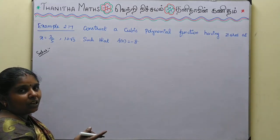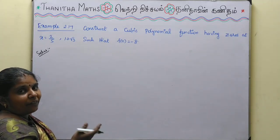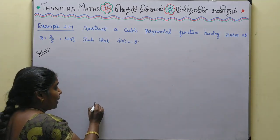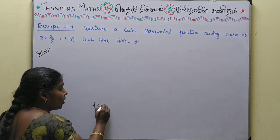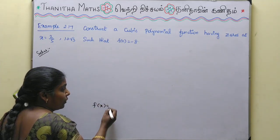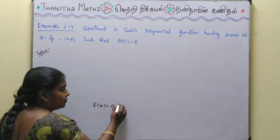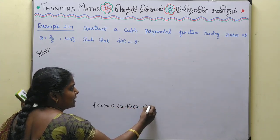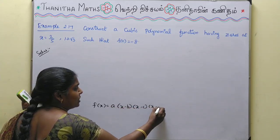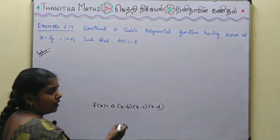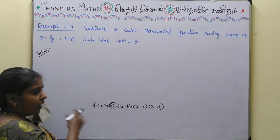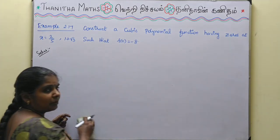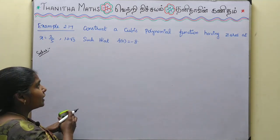If the polynomial is equal to the function, we multiply three factors with a constant: f(x) = k · (x - a)(x - b)(x - c). So we multiply a constant k along with the three linear factors corresponding to the zeros.